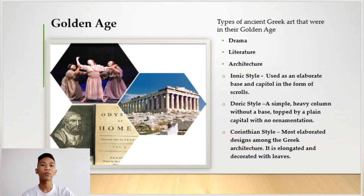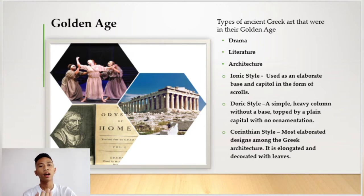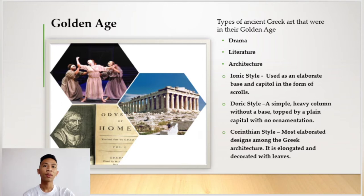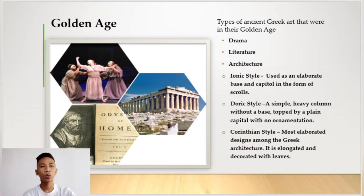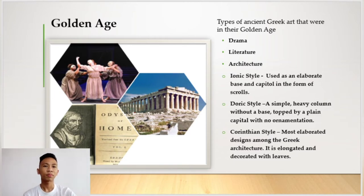Next is literature. These literatures are usually related to Greek civilization. The literatures created by the ancient Greeks during the golden age were usually related to the Greek goddesses — these are the literatures about the Odyssey, Zeus, or any other Greek deities.